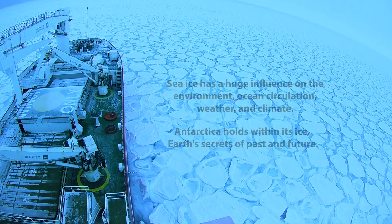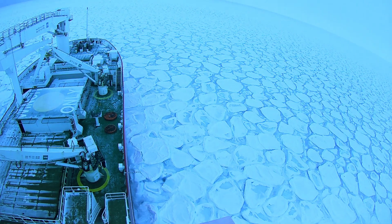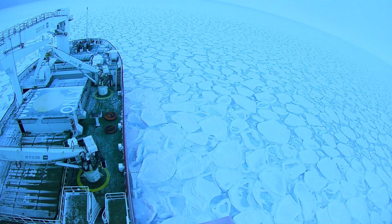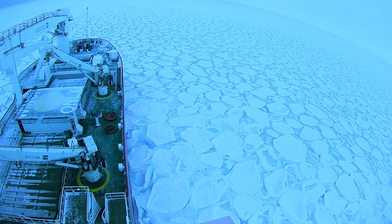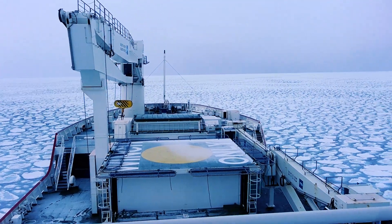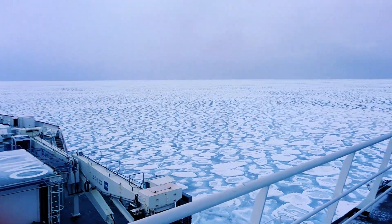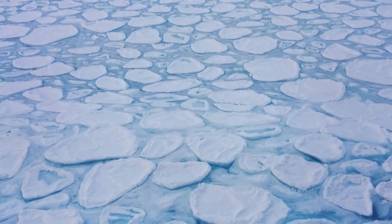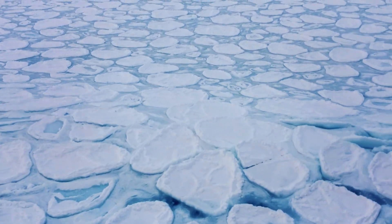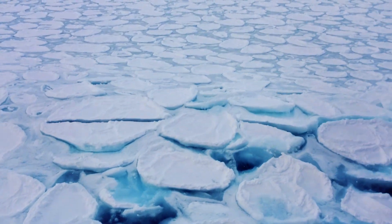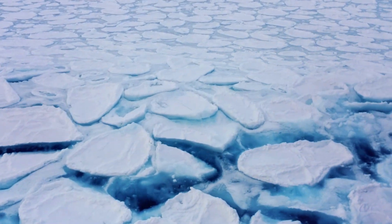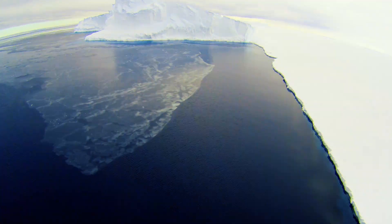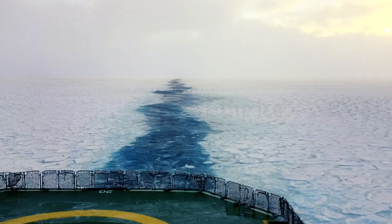The Southern Ocean — an uninterrupted belt of strong winds and stormy water surrounding the Antarctic continent. The closest continent to South African coastlines is home to one of the largest seasonal changes on Earth. Every year, Antarctica doubles its size and gets virtually closer to the African continent.